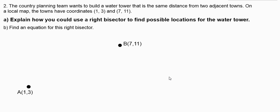It says the country planning team wants to build a water tower that is the same distance from two adjacent towns. On a local map, the towns have coordinates 1, 3 and 7, 11. Explain how you could use a right bisector to find possible locations for the water tower.